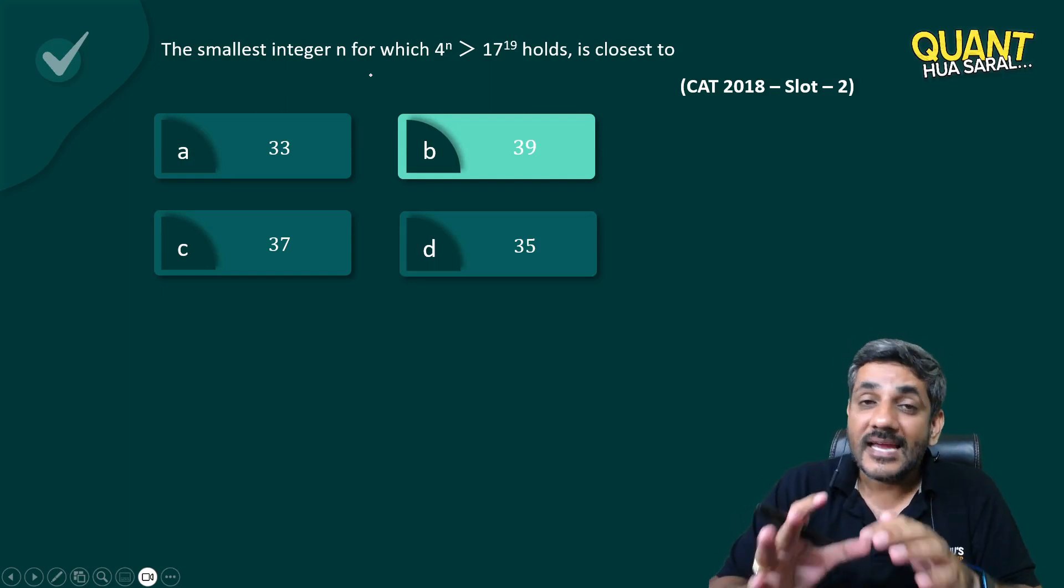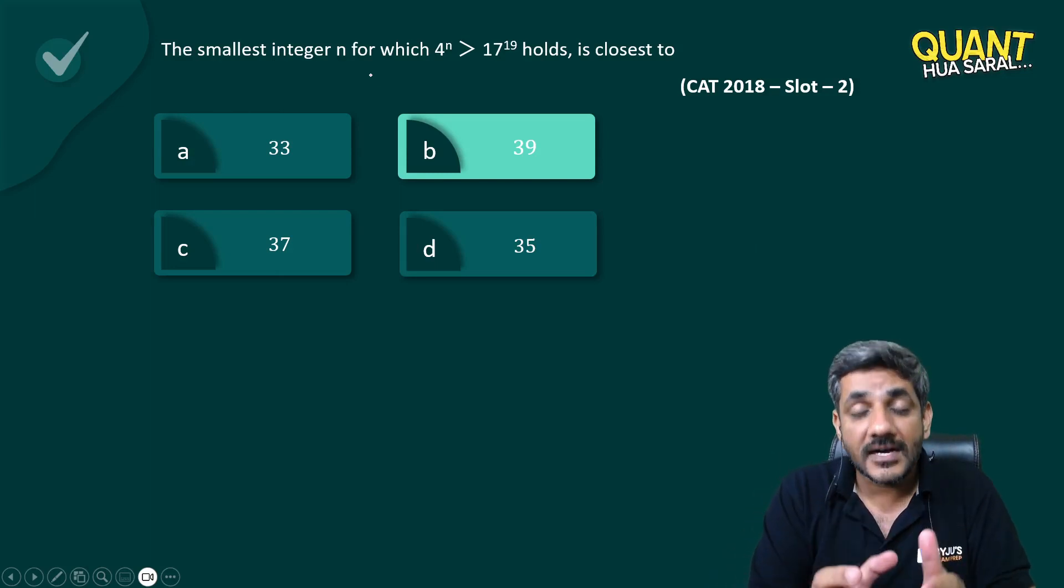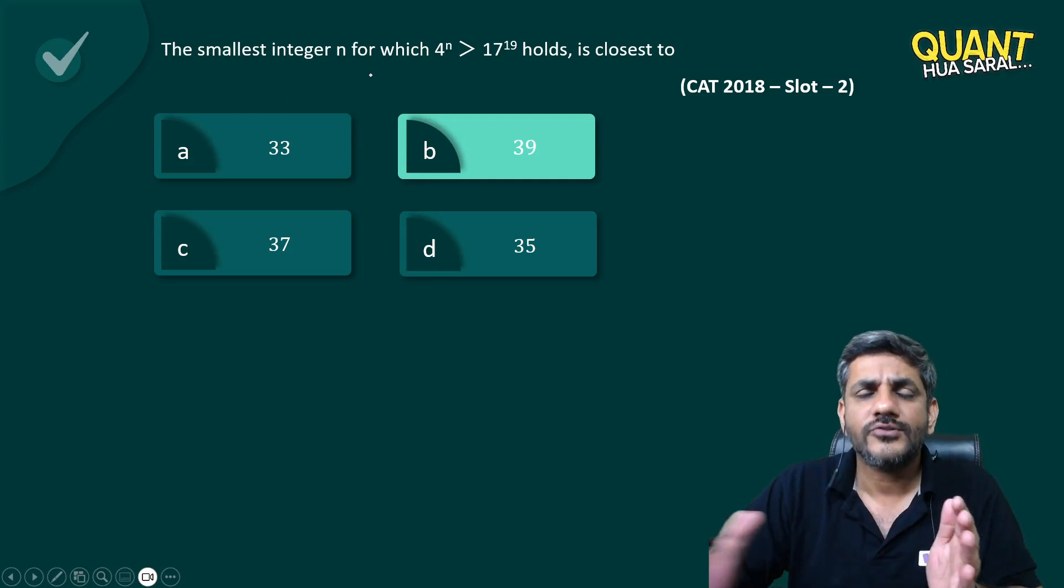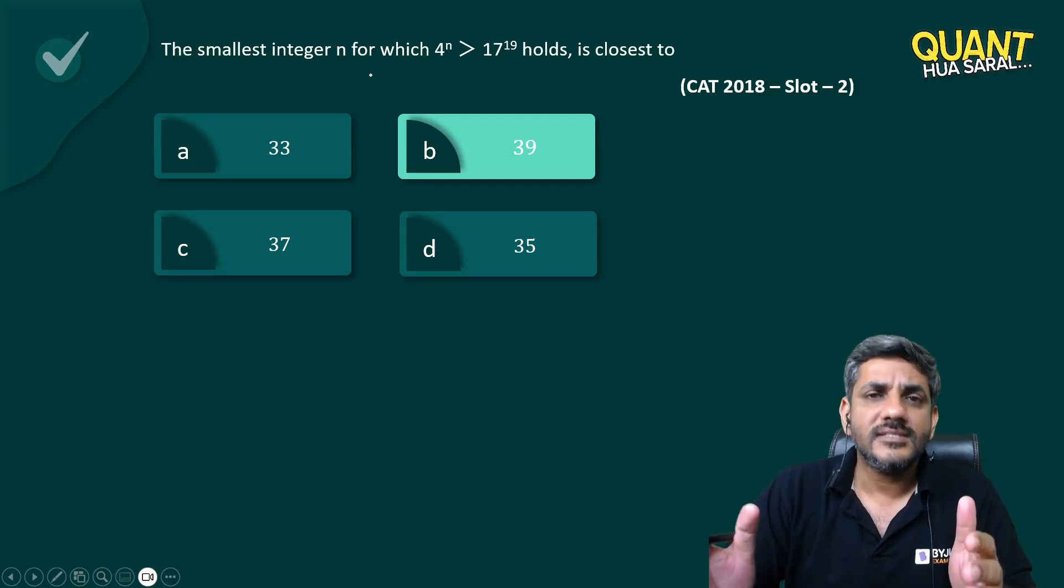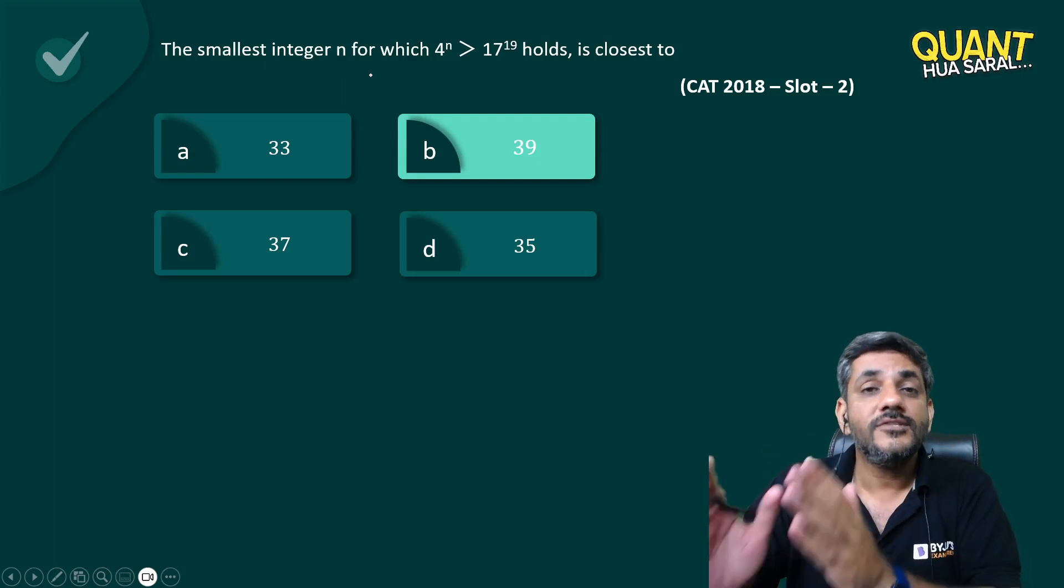CAT gives you many questions in a way where you can actually answer this question fast enough through options. If you do not use options, that question will have a very long solution. There are many such questions that have appeared in past in the CAT exam.